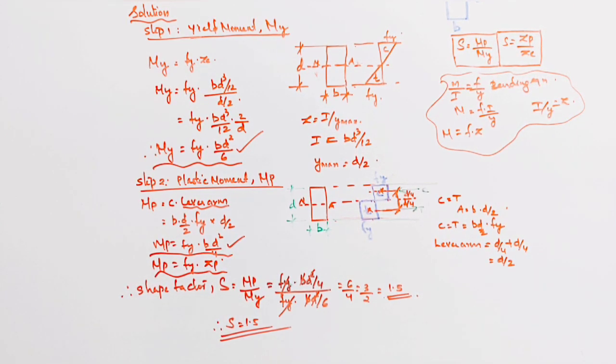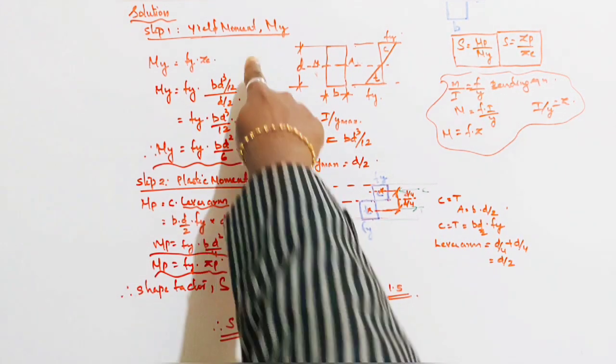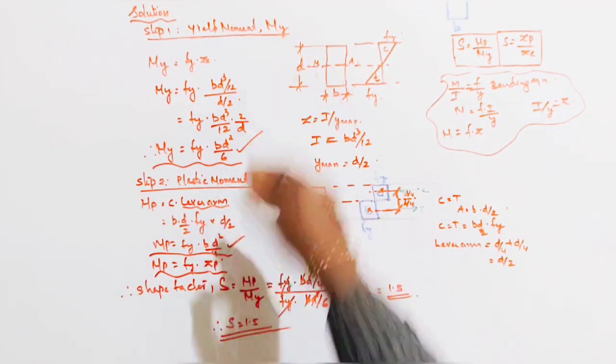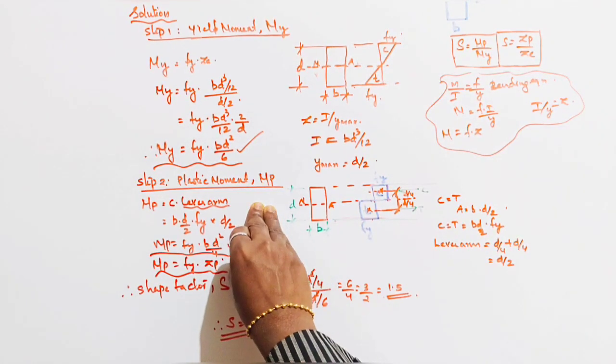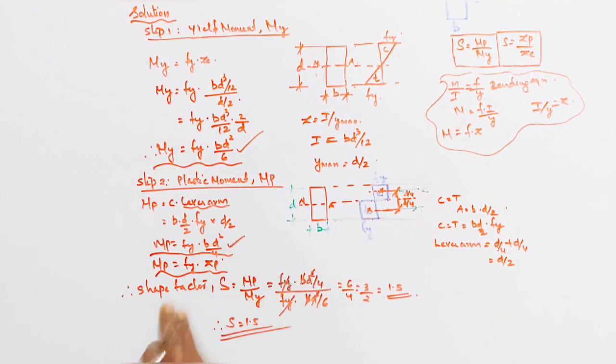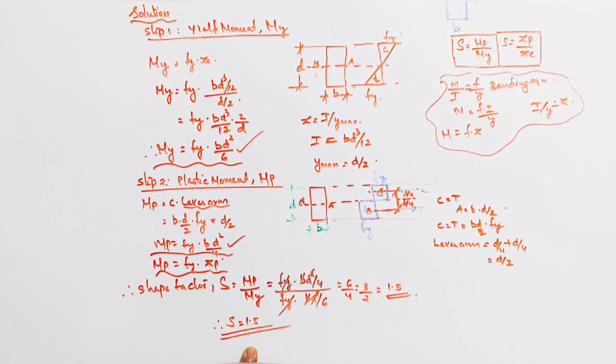Therefore Shape Factor of a Rectangular Section S equal to 1.5. Clear? First step we found Yield Moment. Second step we found Plastic Moment. So Mp divided by My, we substitute the equation, final answer is 1.5. Is it clear? Clear. Have a nice day.